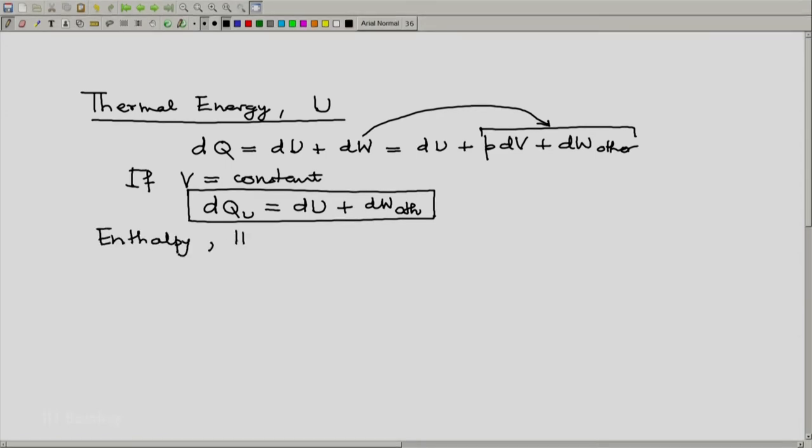Now let us look at enthalpy. We have H equal to U plus PV. Let us expand it. Differential of H, dH is dU plus PDV plus VdP.